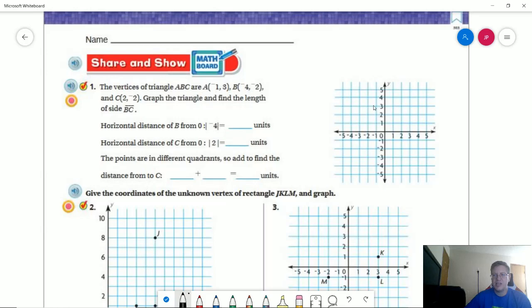So negative 1, positive 3 would give us this for point A. Point B is going to be negative 4, negative 2. And then C is going to be positive 2, negative 2. So it looks like we are going to have some kind of possibly a right triangle.